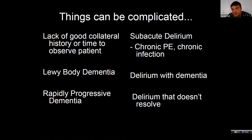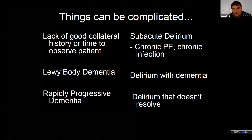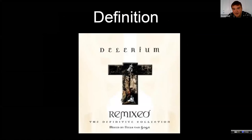As a rule of thumb, these features are what we use to distinguish whether a confused patient is delirious or has dementia — and the management is very different.